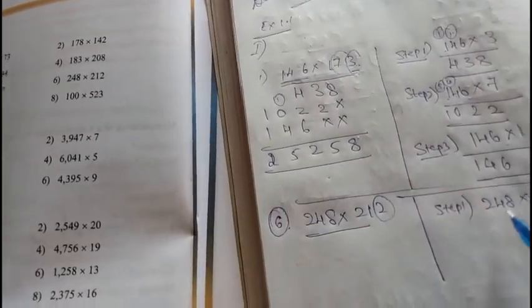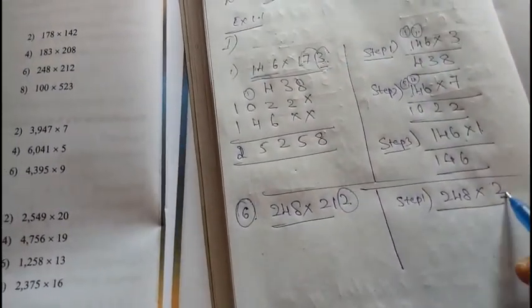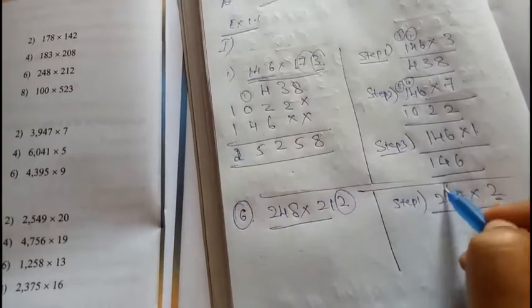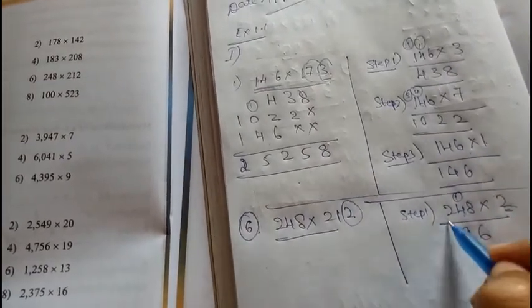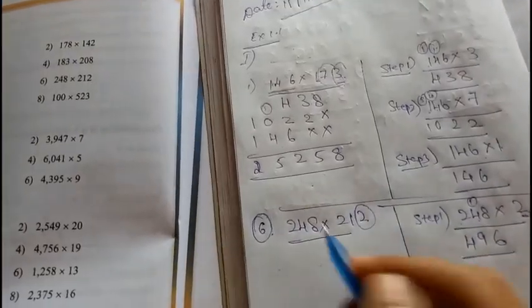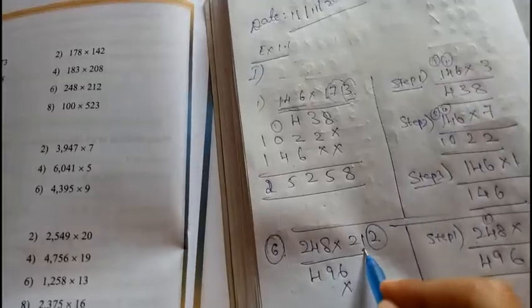Multiply: 2 times 8 is 16, 1 carry. 2 times 4 is 8, plus 1 is 9. 2 times 2 is 4. This is the answer, so write 496, then put an into mark.